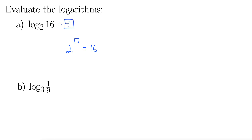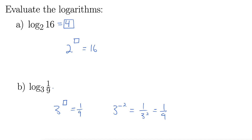For B, we're asking: 3 to what power gives 1/9? Well, 3 to the negative 2 gives 1/9, because 3 to the negative 2 is 1 over 3 squared, which is 1/9 indeed. So the answer to this one is negative 2.